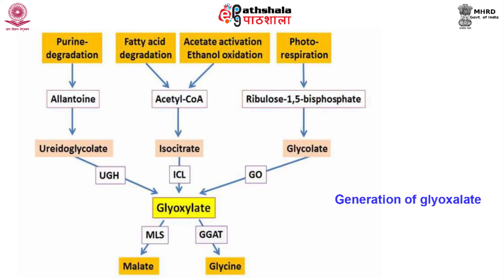Now let us move to functions of peroxisomes. Peroxisomes contain at least 50 different enzymes which function in a variety of biochemical pathways in various cell types. Peroxisomes bring about oxidative breakdown of many substrates like uric acid, amino acids, and fatty acids. Peroxisomes carry out beta oxidation of very long chain fatty acids, which provides a major source of metabolic energy. Peroxisomes are also involved in lipid biosynthesis. Leaf peroxisomes are involved in photorespiration. Glyoxysomes are responsible for the conversion of stored fatty acids to carbohydrates.